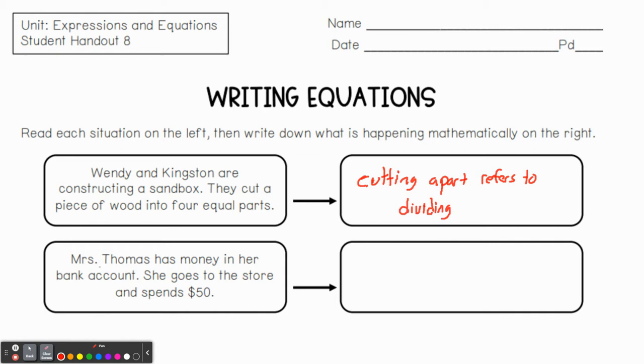Let's look at the next one. Mrs. Thomas has money in her bank account. She goes to the store and spends $50. So what's happening? Well, spending money refers to subtracting or subtraction. We'll just call it subtraction. So hopefully that makes sense.